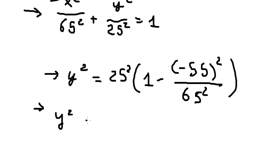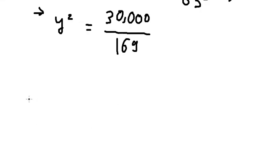So we have y² equals 30,000 over 169. Now we put the square root for both sides, and we have positive and negative.